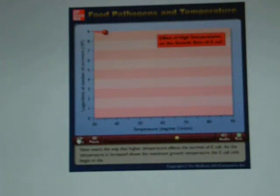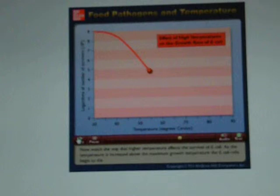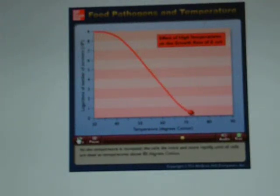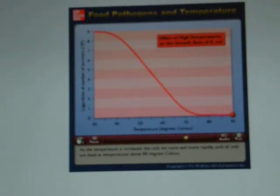Now watch the way that higher temperature affects the survival of E. coli. As the temperature is increased above the maximum growth temperature, the E. coli cells begin to die. As the temperature is increased further, the cells die more and more rapidly until all cells are dead at temperatures above 80 degrees Celsius.